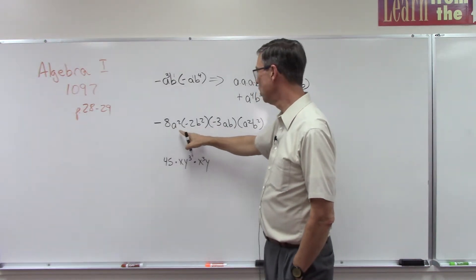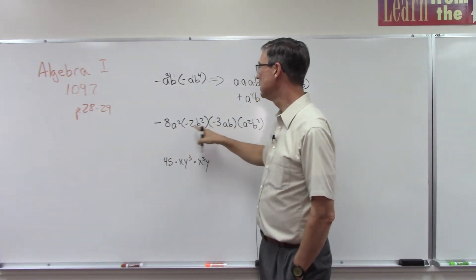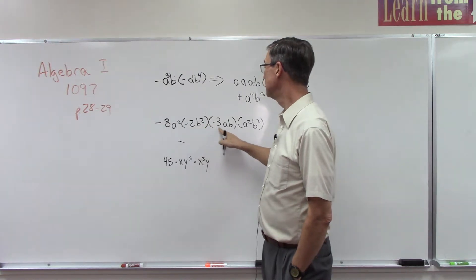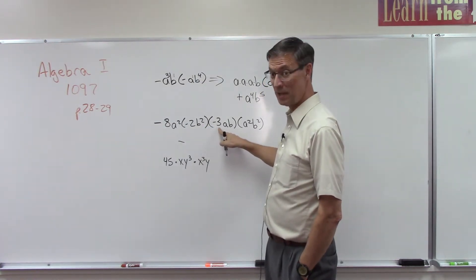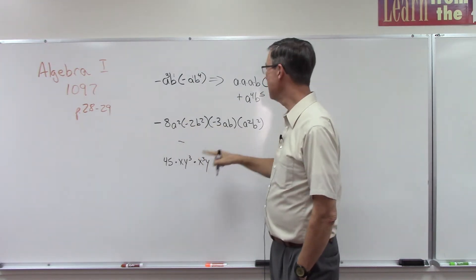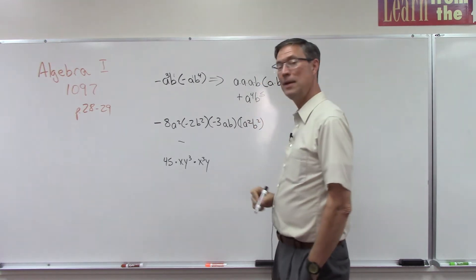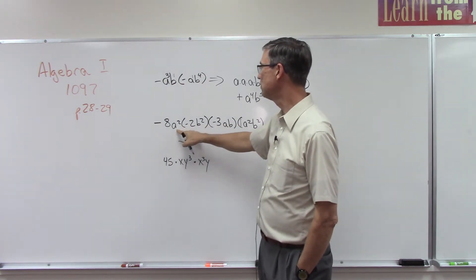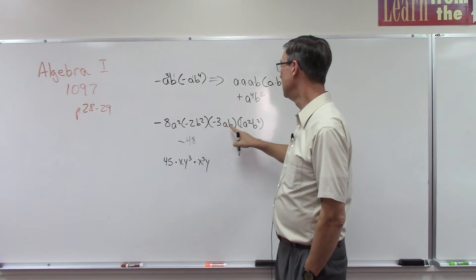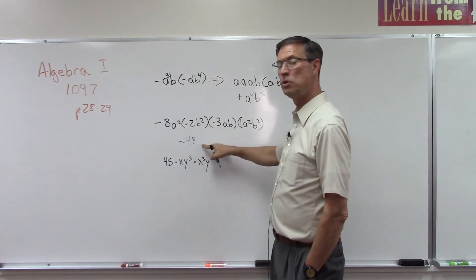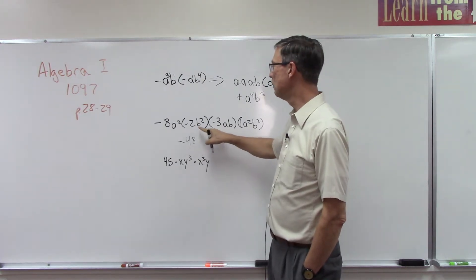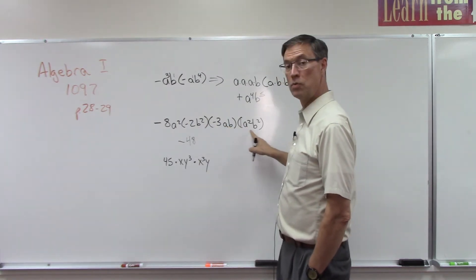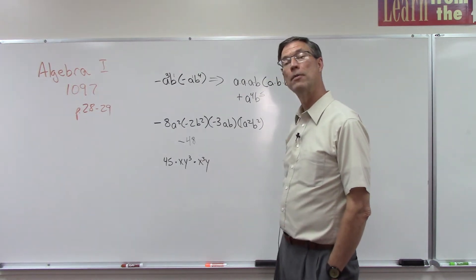Let's try this long one. Take the numbers out front — we already determined the answer will be negative because we have three negatives, an odd number. Eight times two is 16, times three is 48. So 48 negative. Now add the exponents on a: two plus one plus two. Write down that variable with that exponent. Then add the b's: none here, two here, plus one plus two — that becomes the exponent on b.